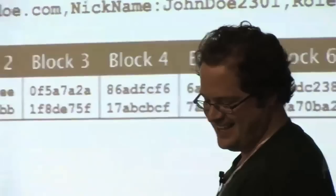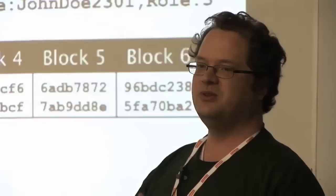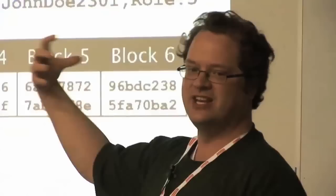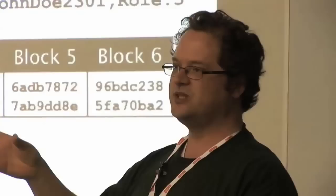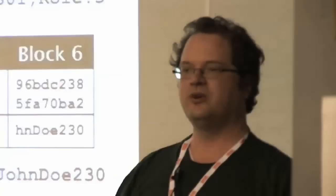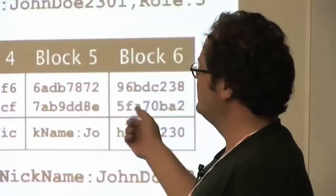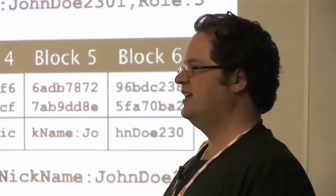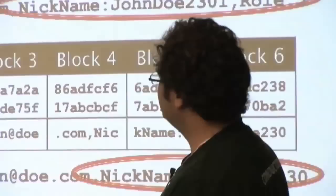It looks secure — it's hex, it's secure, right? But what happens if we swap things around? In ECB mode there is a direct correlation between which block contains which piece of data. So we can just play with things. In this contrived example we swap block seven into where block two is, and when decryption happens you get something quite different. We've gone from role 3 to role 39. In the context of the application, who knows — but this kind of manipulation is something we're generally not looking for.